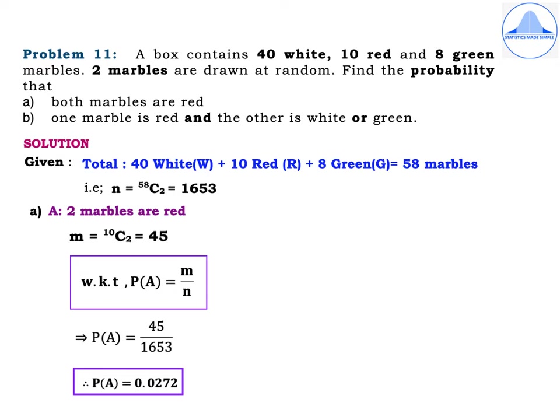Starting with the solution, let us first write under given: the total is 40 white plus 10 red plus 8 green, which is equal to 58 marbles. Now out of these 58 marbles, we have to choose 2 marbles at random. So the total number of ways in which this can be done is N = 58C2, which is equal to 1653.